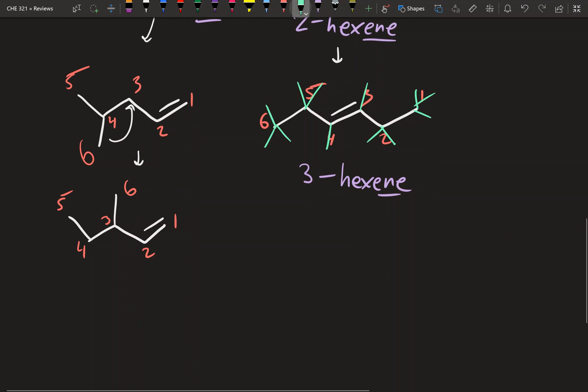And so now we have another isomer. And if you want, let's just go through the hydrogens here. 1, 2, 3, 4, 5, 6, 7, 8, 9, 10, 11, 12. So that one also checks out.